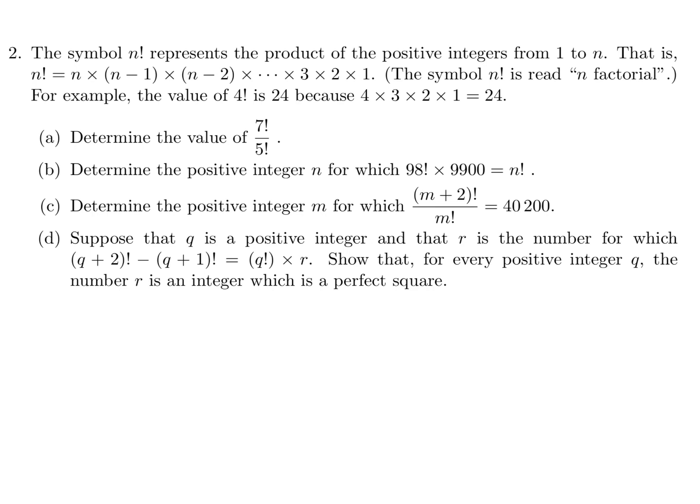Determine the value of 7 factorial over 5 factorial. So this would be 7 times 6 times 5 times 4 times 3 times 2 times 1. And the bottom would be 5 times 4 times 3 times 2 times 1. Now interestingly, this and this are the same. So they cancel, and then you're just left with 7 times 6, which is 42. So it's a quick way of doing that.